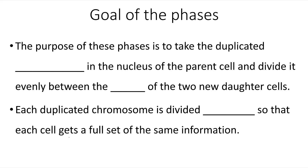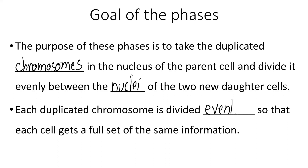Now the purpose of these phases — of this cell division — is to take those duplicated chromosomes that were made during the S phase of interphase in the nucleus of the parent cell, and to divide them evenly between the nuclei of the two new daughter cells. Each duplicated chromosome is divided evenly so that each cell gets a full set of the same information.